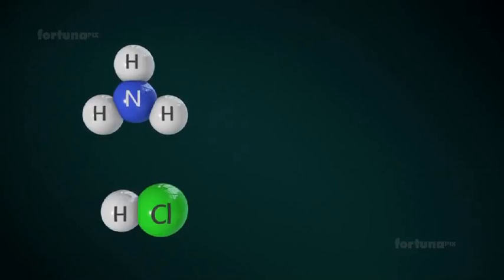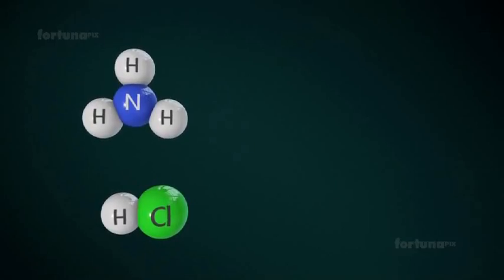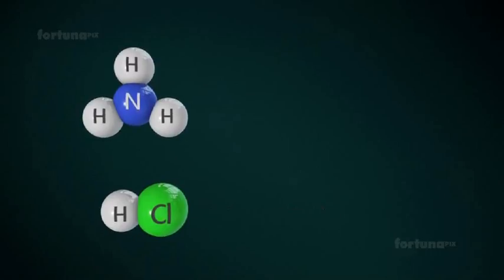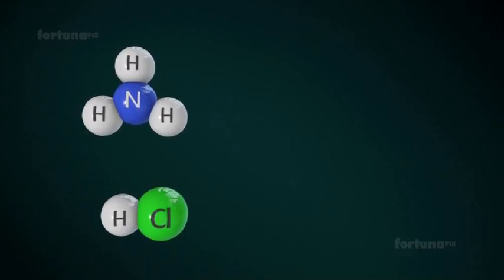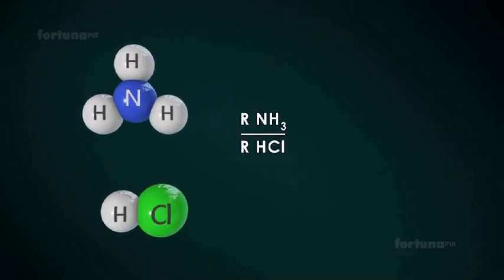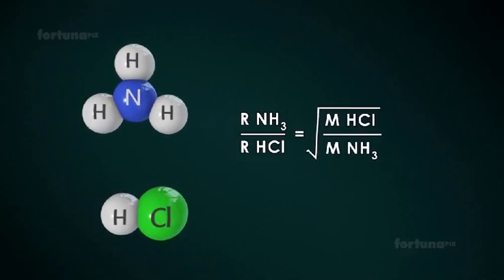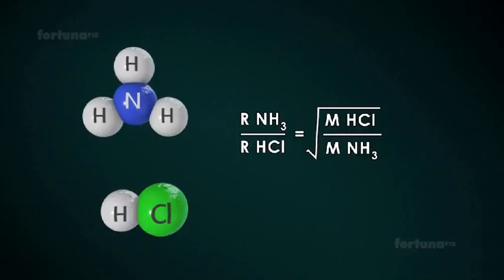For example, consider two gases, Ammonia and Hydrogen Chloride, and apply Graham's Law. Then it gives R NH3 divided by R HCl equals square root of M HCl divided by M NH3.